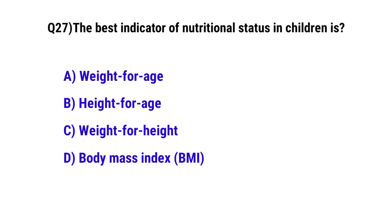Question No. 27: The best indicator of nutritional status in children is — the correct option is C: weight for age.